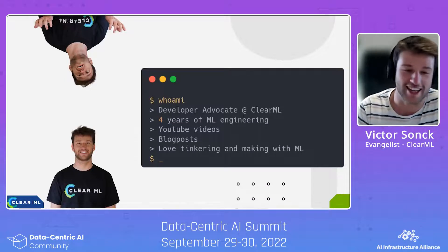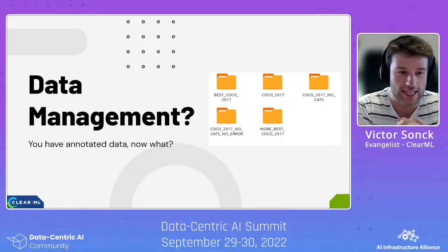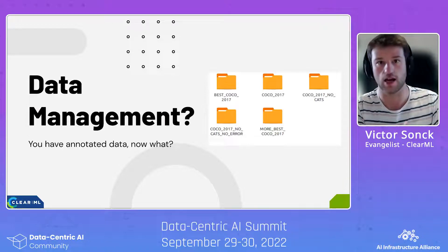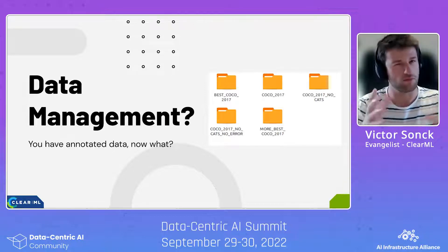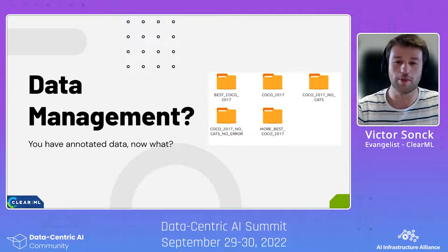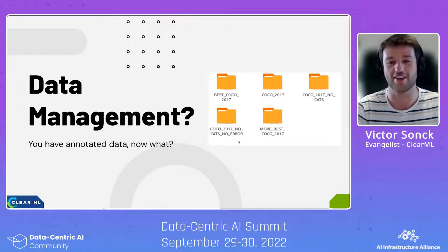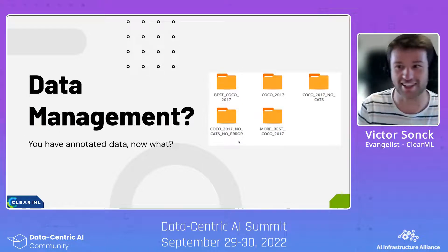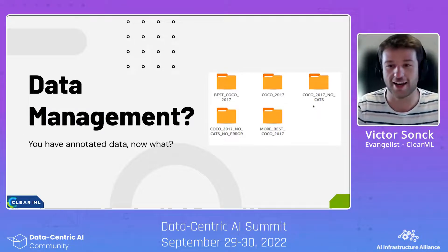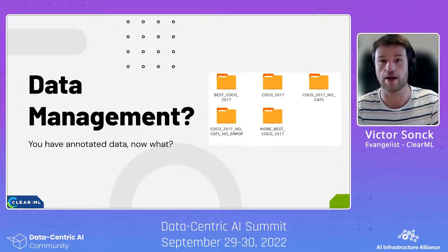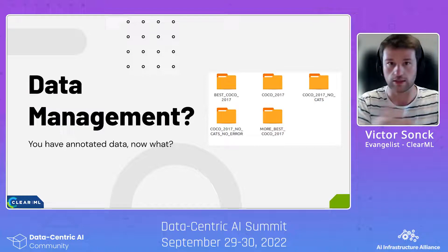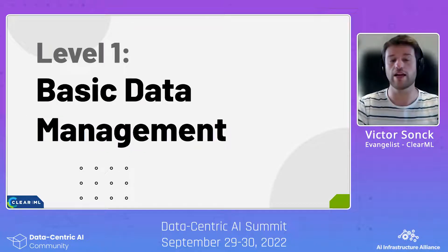Today is all about Data-Centric AI. So what is it? The point is you have annotated data because the labeling phase is over — though it's going to be cyclic. A lot of people will tend to just rename folders: they have the COCO dataset, then change some stuff and have the 'best COCO dataset', then a 'no cats version', and so on. That's not ideal, and this is why we need to manage our data correctly before getting into data-centric AI.